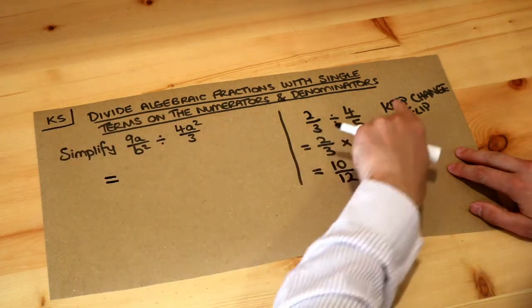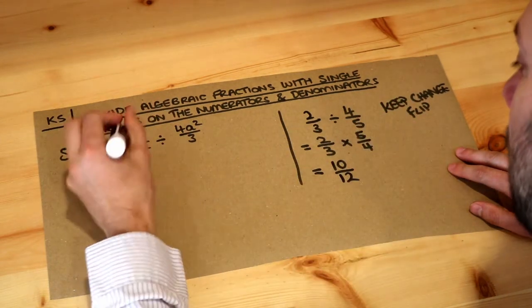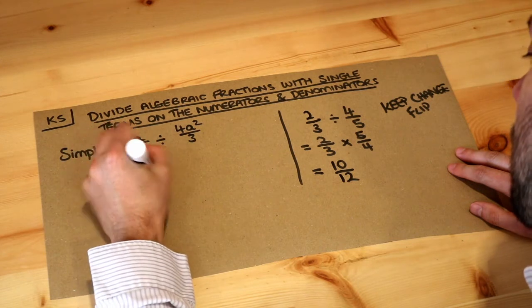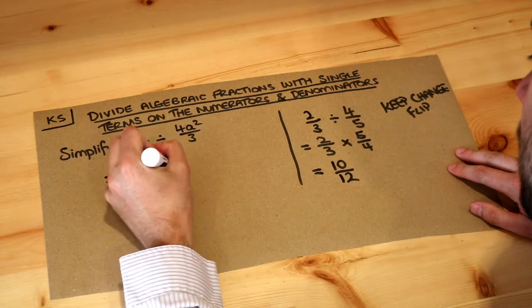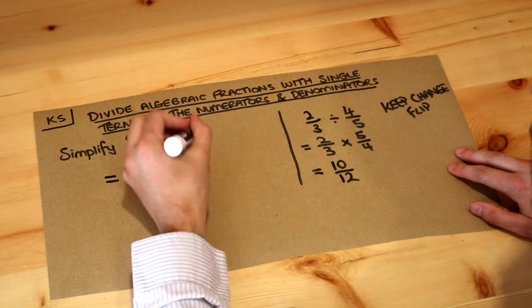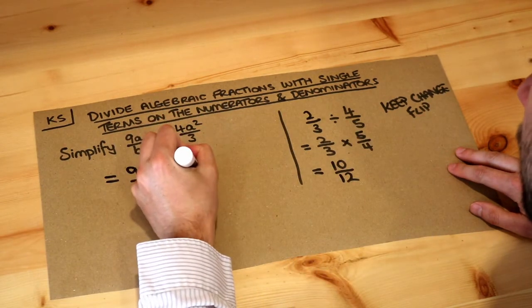So we do the same thing, keep, change, flip. We keep this as it is, we change the divide for times, and we flip the second fraction, so that becomes three over four a squared.